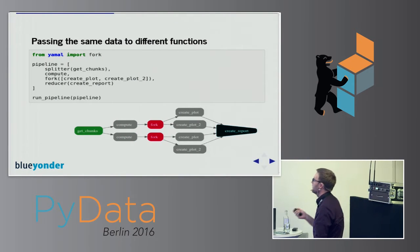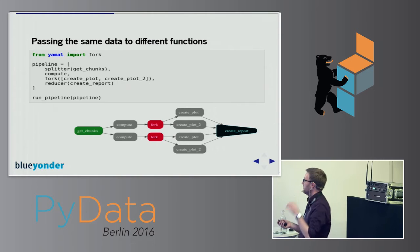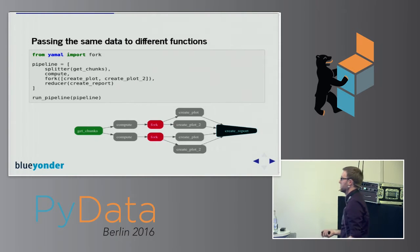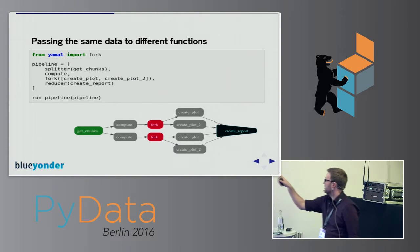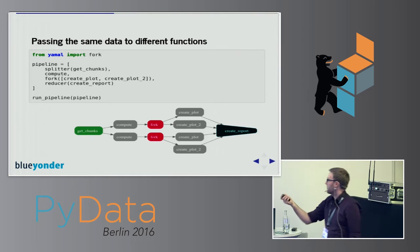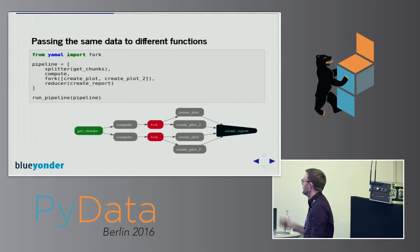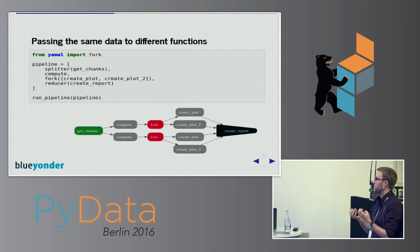Another useful construct in Yamal is the ability to fork data paths. At some point in the pipeline we might want to take a piece of data and push it to different functions. We use this fork construct and push the same data to createplot and to createplot2 to get another plot. All these paths are then joined at the end to create a single report. In the pipeline definition you can see this fork construct in the third line.